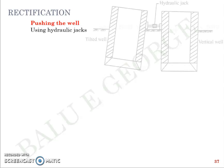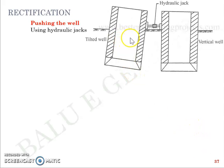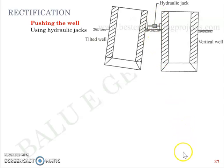Rectification of tilt or shift — these solutions are quite intuitive. Method number one is pushing the well using a hydraulic jack. You place a hydraulic jack between two wells: one is the tilting well and the other acts as a strong support. You jack the tilting well back to correct and rectify it.